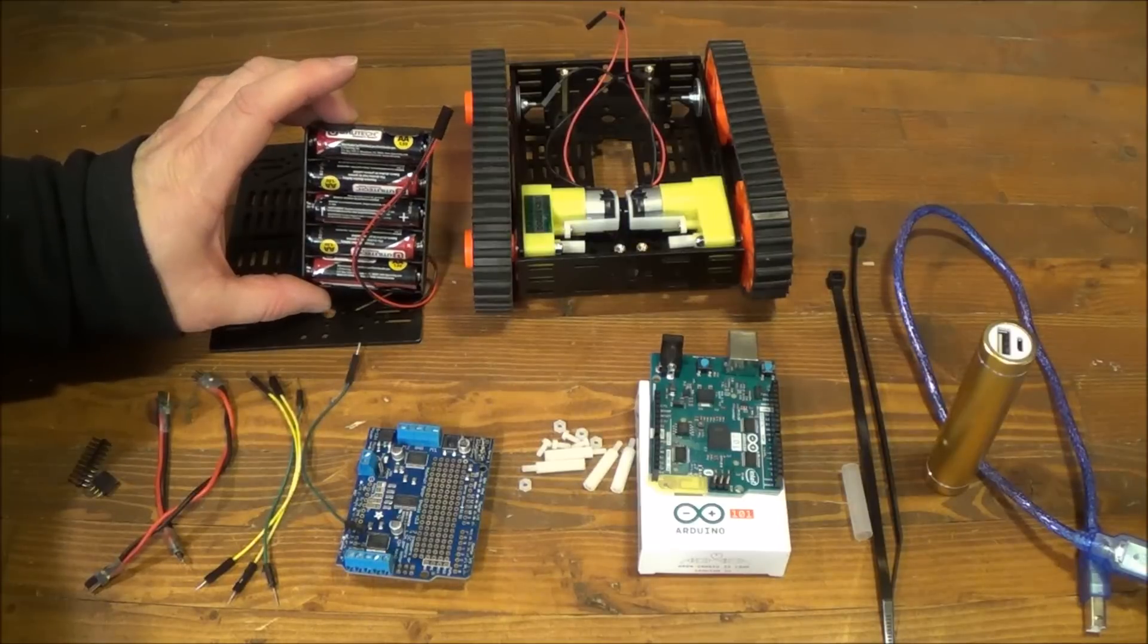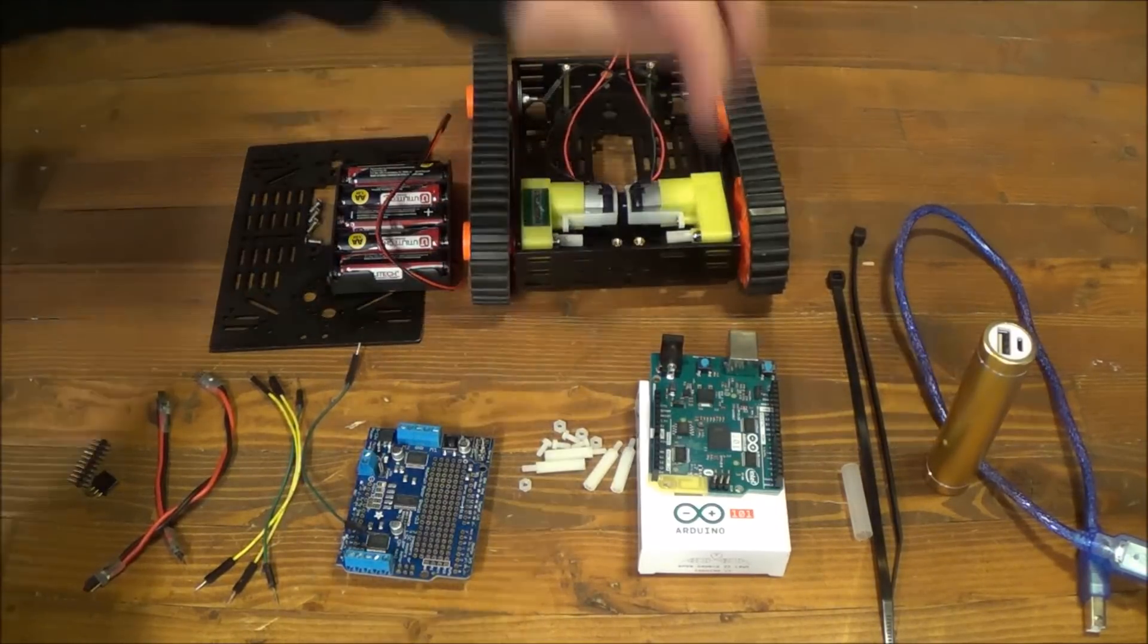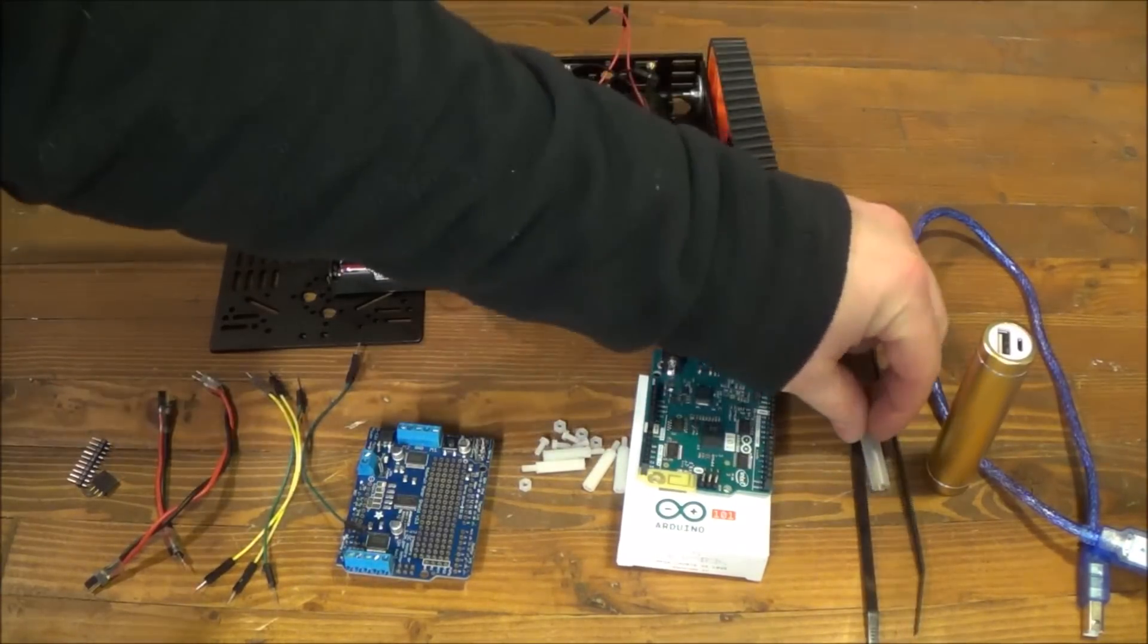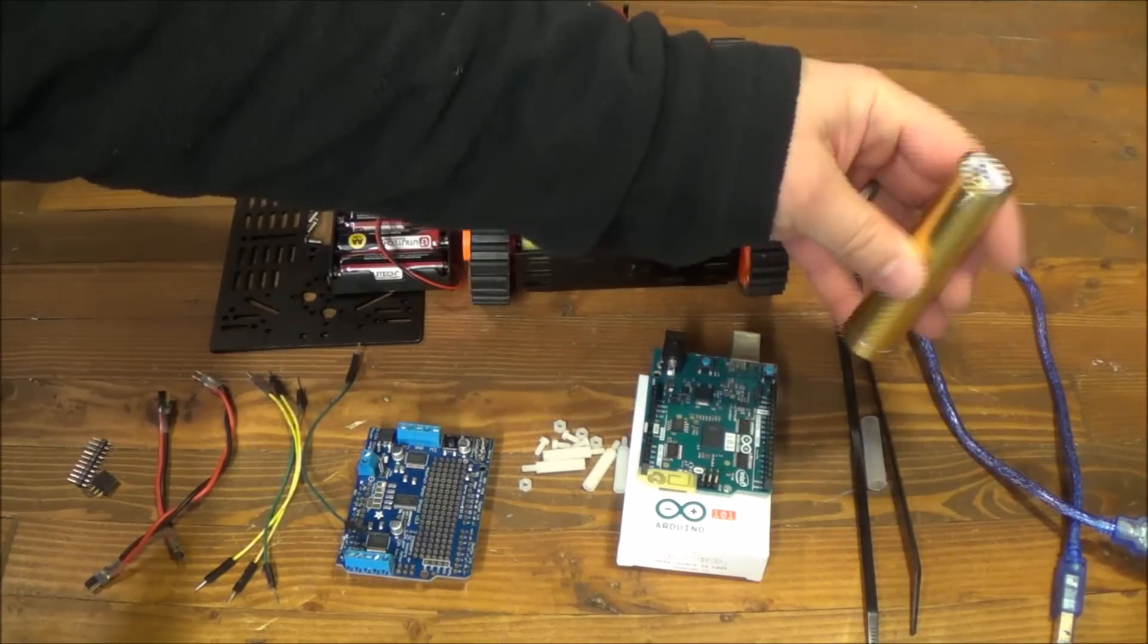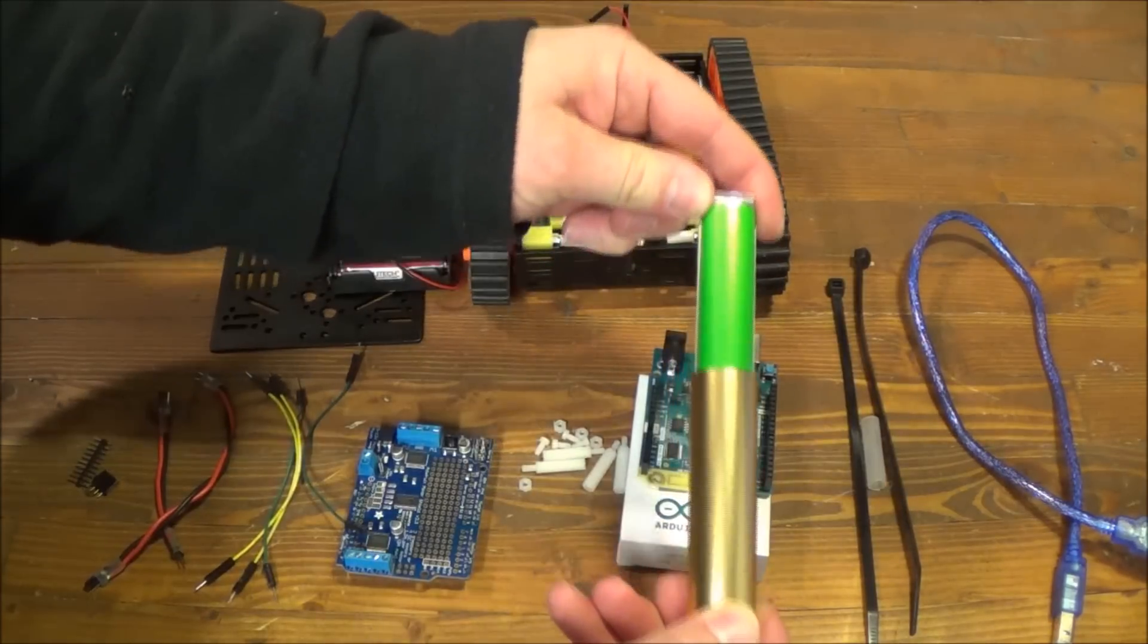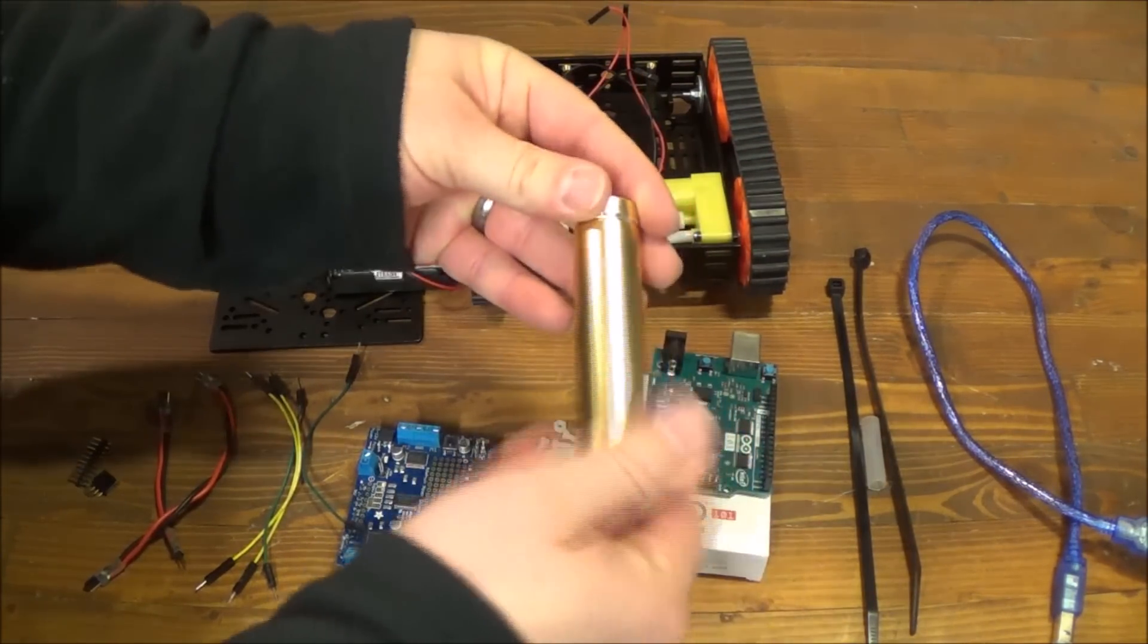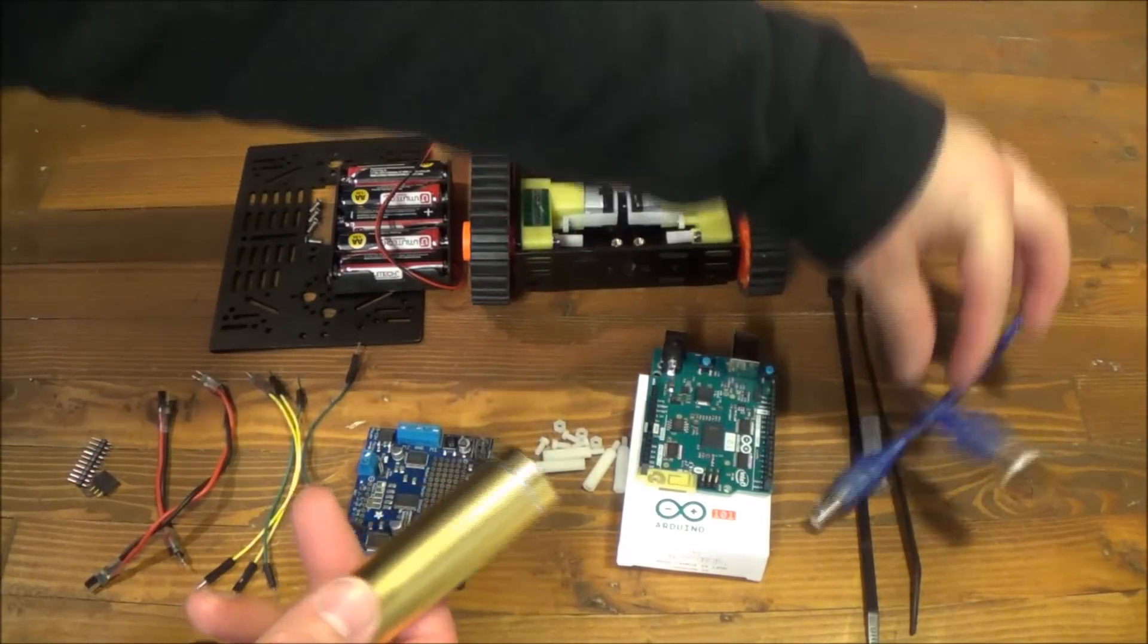Five AA batteries for the motor battery pack. And then of course we've got the chassis here. Some zip ties. A little bit of heat shrink tubing if you want. And this is a USB battery pack. It's got a single lithium battery in here powering it. But it can put out five volts for our Arduino. And then of course a short USB cable.